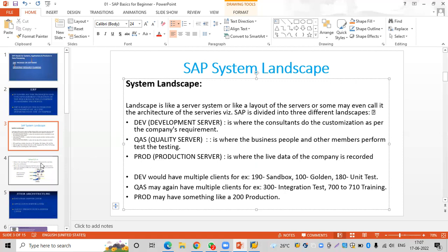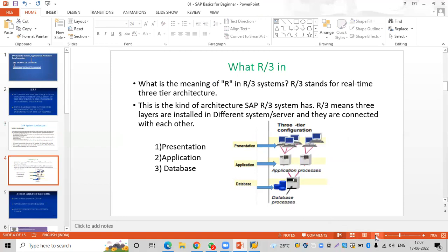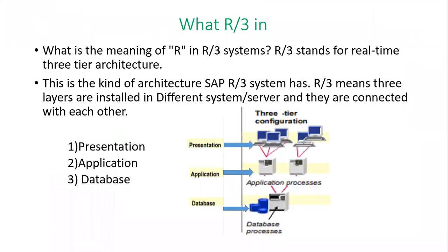Now let's move on to what is R3. R3 is a real-time three-tier architecture. In the beginning days SAP had a two-tier architecture. When they came up with the three-tier architecture, SAP had three layers: a presentation layer, an application layer, and a database layer. Now let's move on to the next slide to understand what exactly each layer contains.